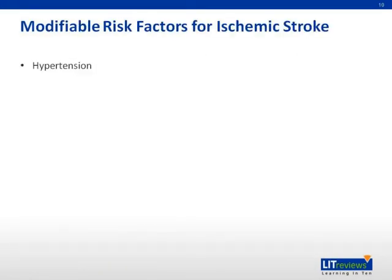There are a number of modifiable risk factors for ischemic stroke, wherein hypertension is the most common and most important one. Blood pressure of around 140 to 160 systolic and 90 to 94 diastolic increases the risk of stroke by 1.5 times, while blood pressure of more than 160 systolic and 95 diastolic increases the risk by 3 to 4 times. Diabetes mellitus increases risk of ischemic stroke by about two times, independent of other associated risks. Dyslipidemia is another risk factor, with one study showing that for every 1 millimole per liter increase in total cholesterol, there is a concurrent 25% increased risk of ischemic stroke.